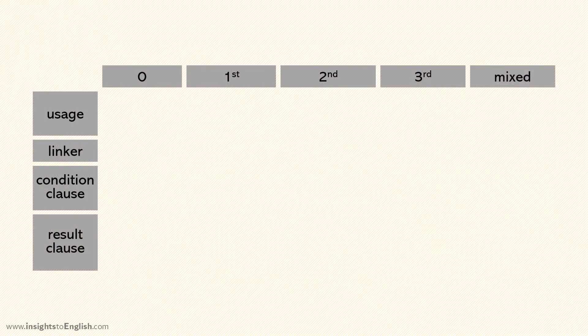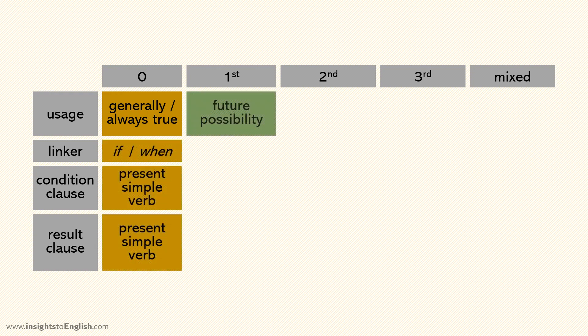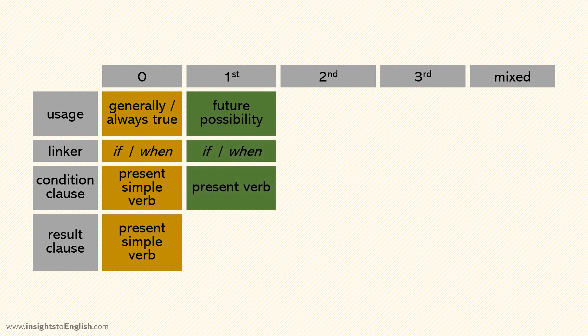I'll just run through everything really quickly if that's okay with you. We use zero conditional for things that are generally or always true. We put if or when before the condition clause which should be expressed in the present simple tense. The result clause is also in the present simple tense. The first is for possible or even probable events in the future. Again we say when if we're certain it will happen, but if otherwise. The condition clause is expressed in the present tense while the result clause is in the future tense. If we're not certain we use modals like could or might.